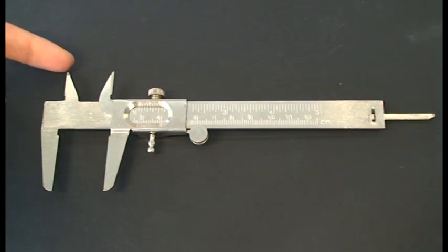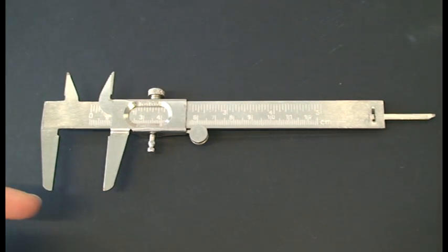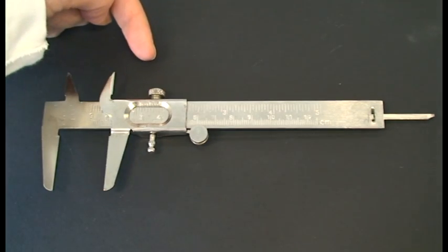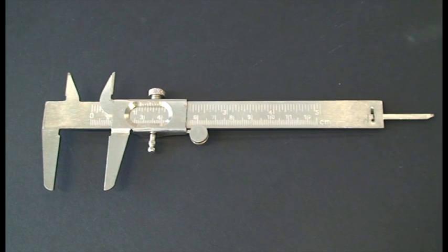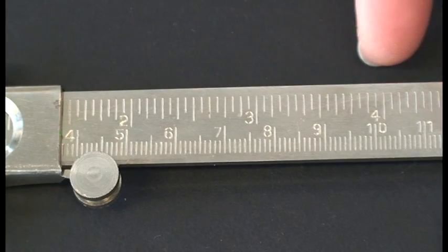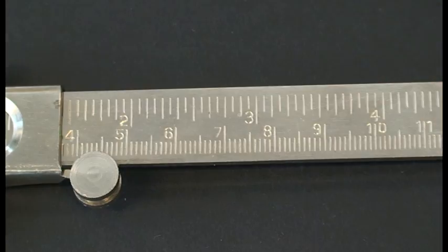Vernier calipers consist of internal jaws, external jaws, a locking screw, a metric scale and a depth measuring blade. Older vernier calipers may also have an imperial scale along the top edge.